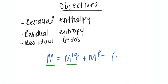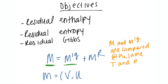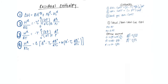M and M ideal gas are compared at the same temperature and pressure. M, your molar property, could be things like molar volume (in cubic meters per mole), internal energy, enthalpy, entropy, Gibbs — the list goes on.